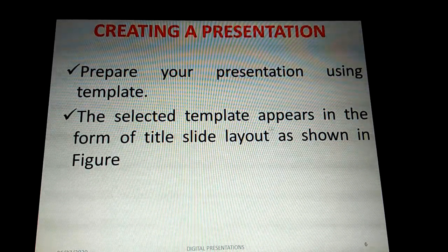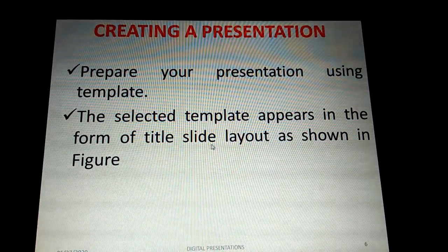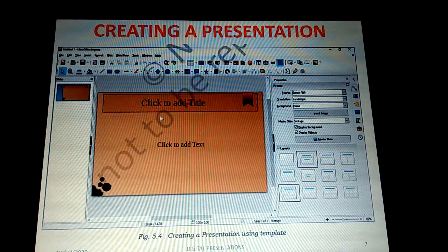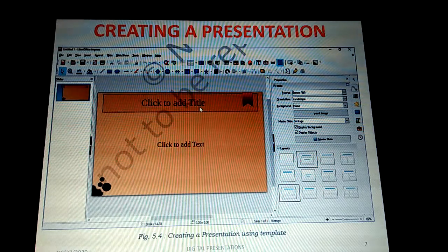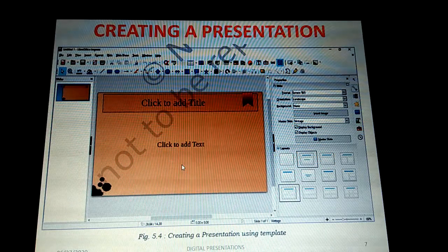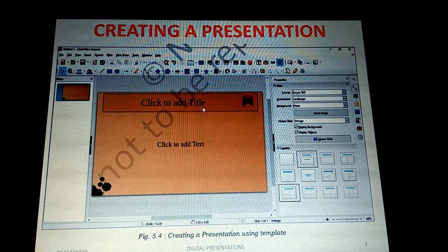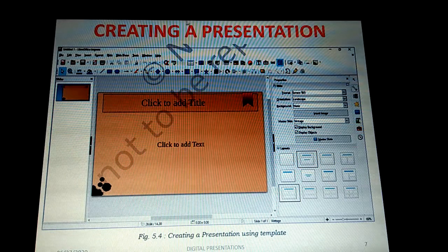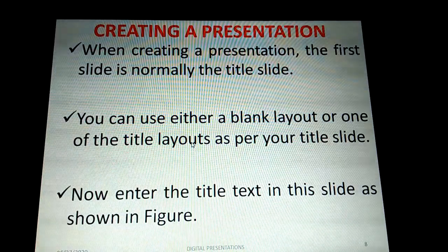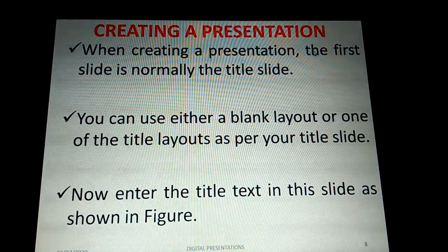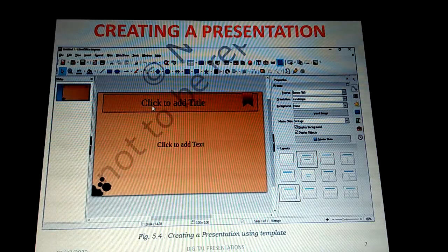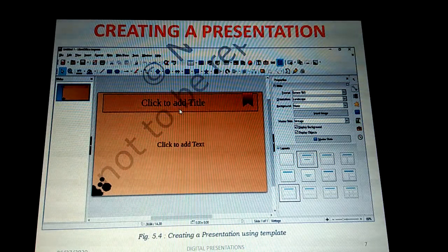After selecting a template, it will appear in the form of a title slide layout as shown in the figure. The selected template will display in the presentation with a 'Click to add title' placeholder for the heading, and a content area below. When creating a presentation, the first slide is normally the title slide, which always shows 'Click to add title.'